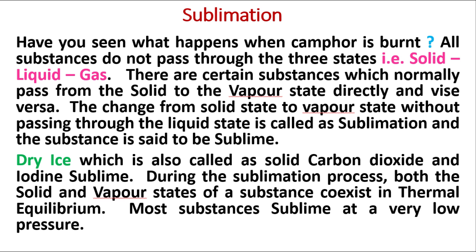The substance is said to sublime. Examples include dry ice, which is also called solid carbon dioxide, as well as iodine and acid. During sublimation, both the solid and vapor states of a substance coexist in thermal equilibrium. Most substances sublime at a very low pressure.